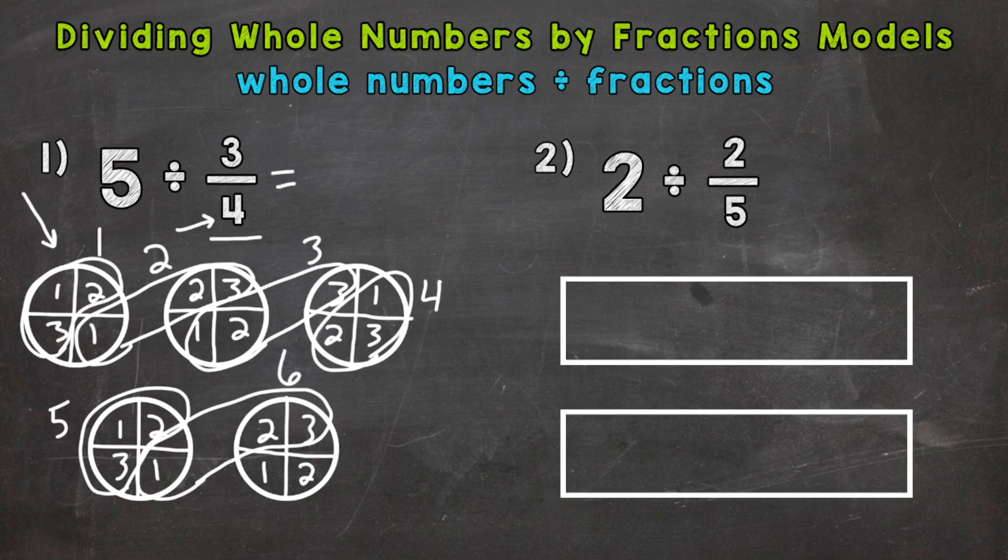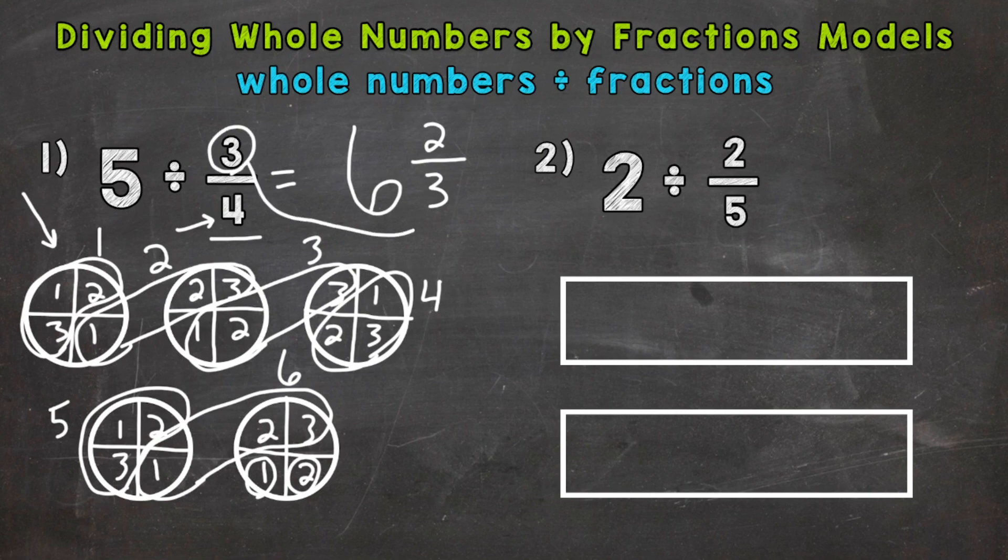So that's the whole number part of our answer. 6 whole groups of 3 fourths within those 5 wholes. Now we have these 2 pieces left over, so that's the numerator of our fractional part of our answer. The denominator is going to be 3 because we need 3 pieces in order to make a whole group of 3 fourths. So 2 thirds. Now this numerator here tells us what our denominator is going to be, but we need to know why it's 3. It's because we need 3 pieces to make a whole group of 3 fourths, and we only have 2 out of those 3 pieces needed to make another whole.